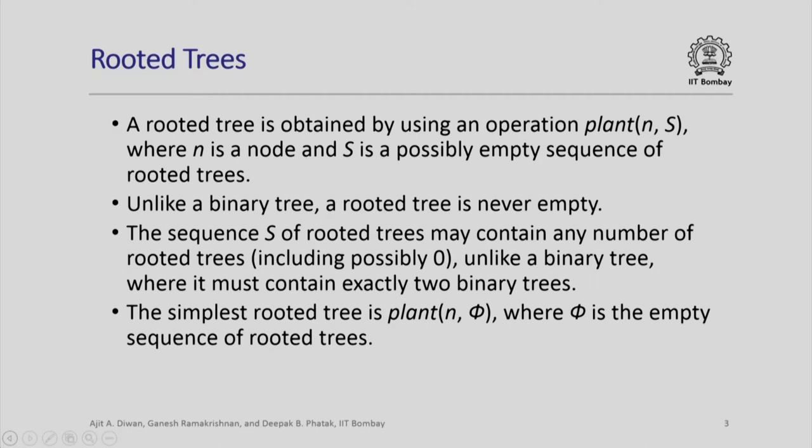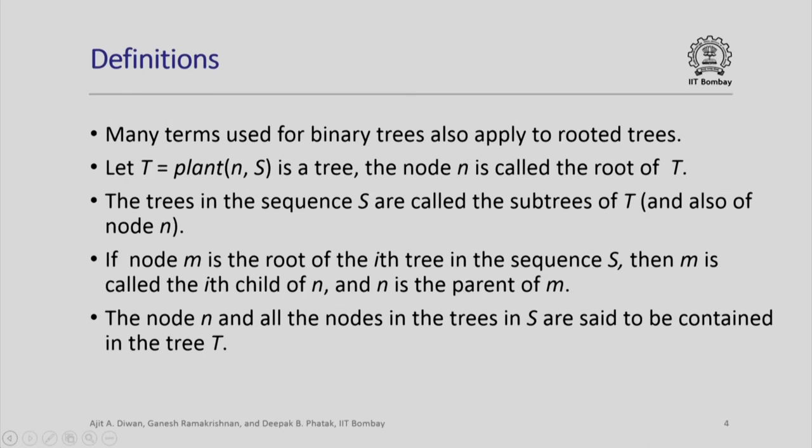The simplest rooted tree is plant(n, []) where [] is the empty sequence of rooted trees. Many terms used for binary trees also apply to rooted trees. If you have a tree plant(n, s), node n is called the root, and the trees in the sequence s are called the subtrees of t and also of node n. A node can have any number of subtrees since s is a sequence. If node m is the root of the i-th tree in s, then m is called the i-th child of n and n is the parent of m. Unlike left and right children in binary trees, rooted trees have a 0th child, first child, second child, and so on, with any number of children starting from 0.